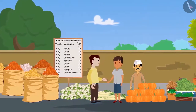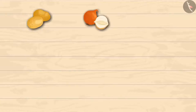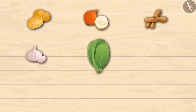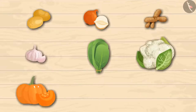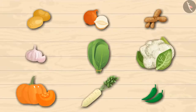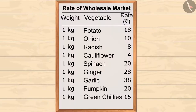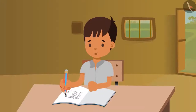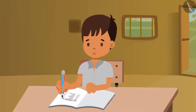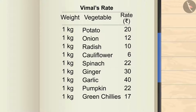Today Vimal bought potatoes, onions, ginger, garlic, spinach, cauliflower, pumpkin, radish and green chillies. You can see their prices according to the wholesale market. After returning home, Vimal prepared a list like this.